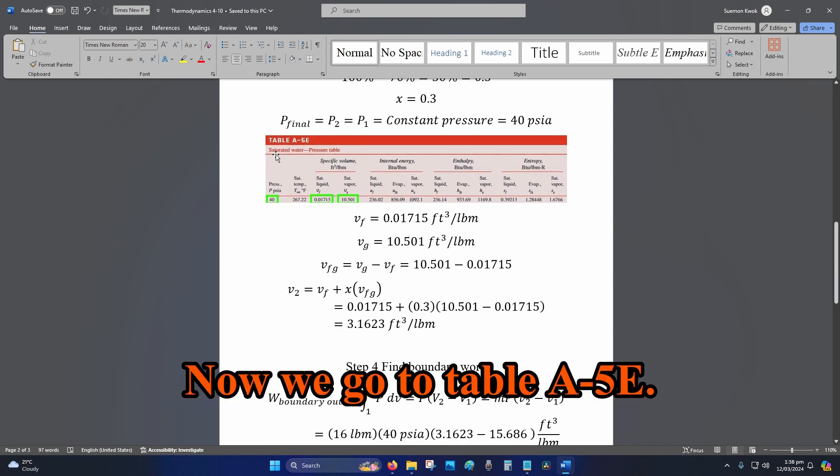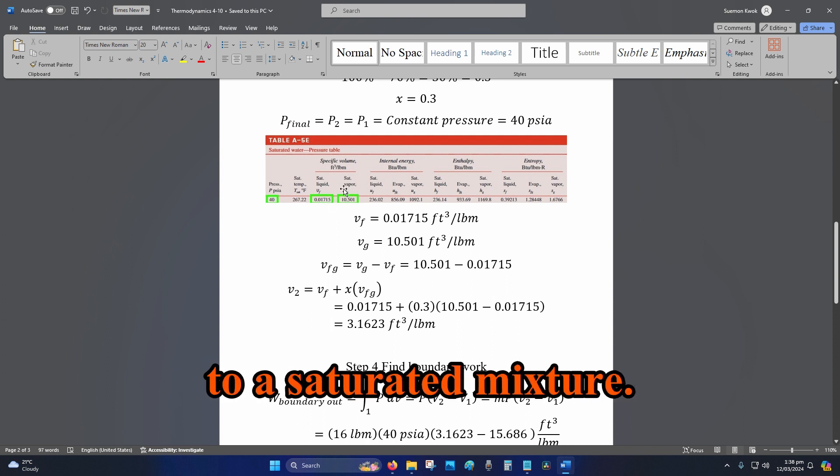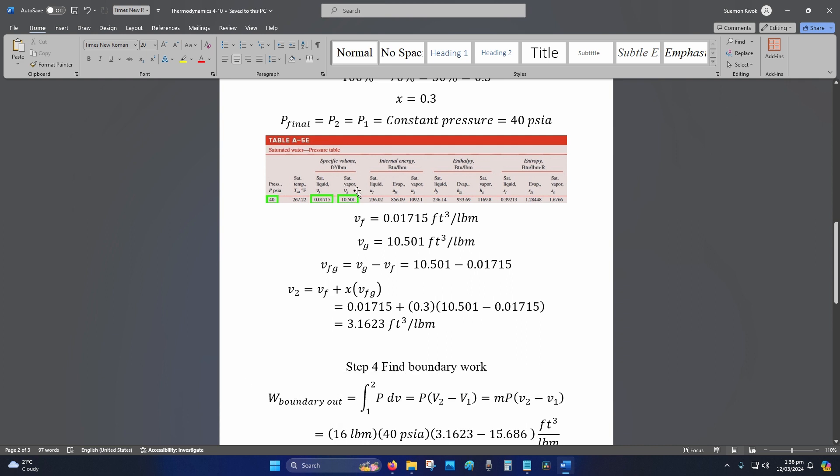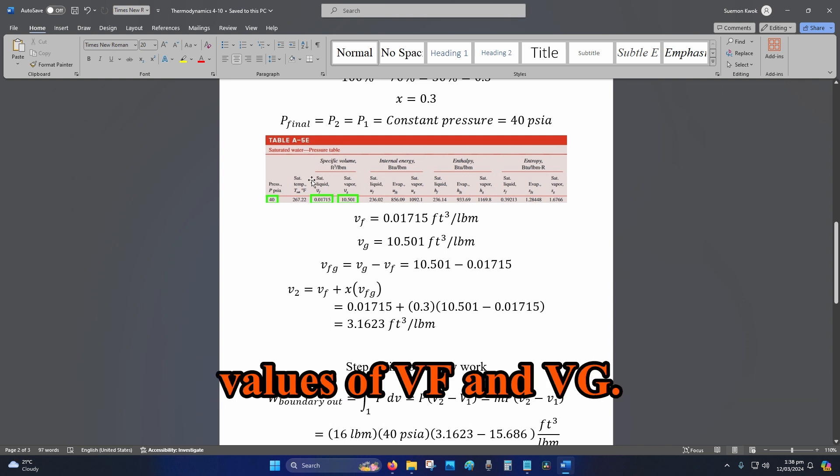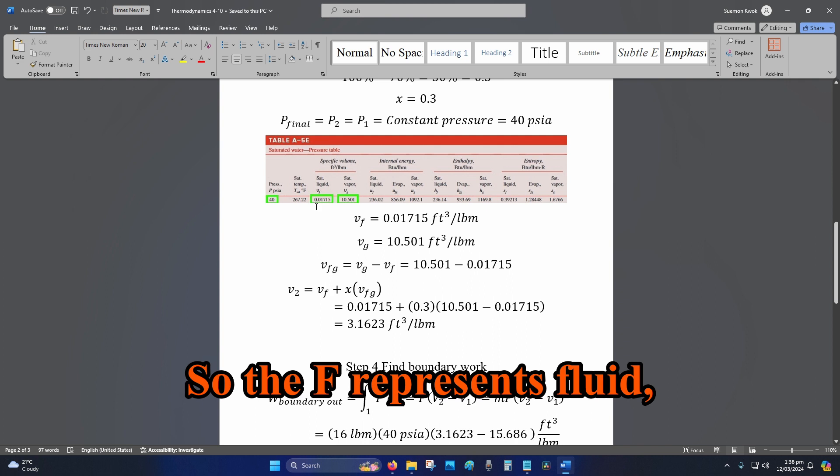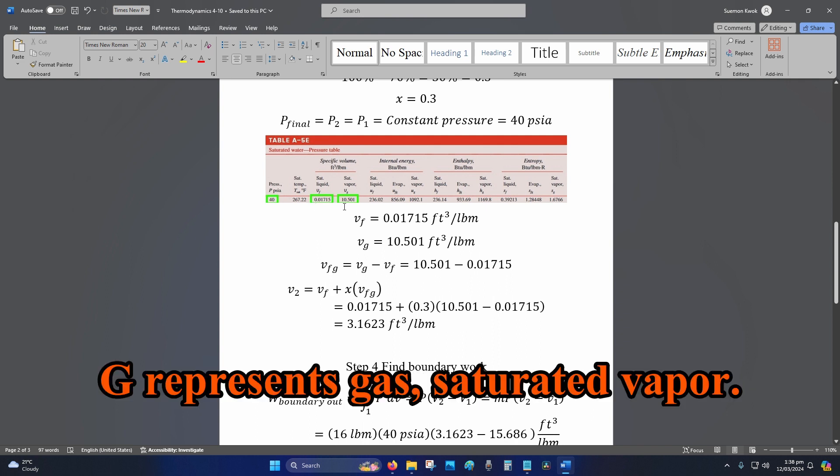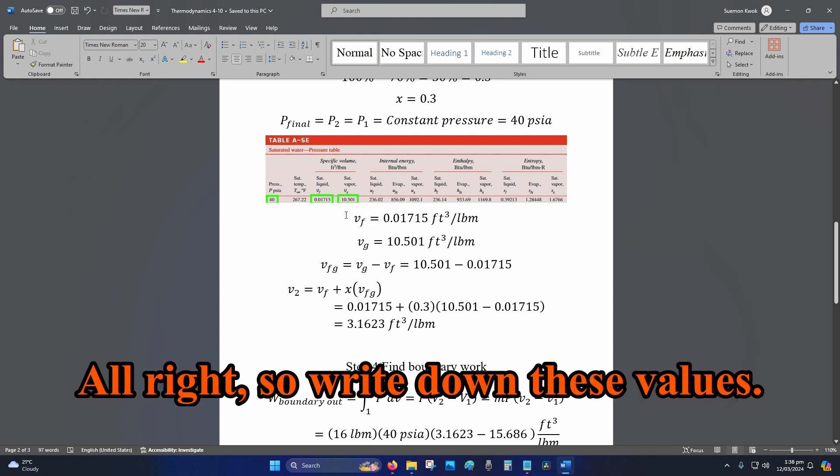Now we go to table A-5E. We go to 40 psi. Now it's cooled down to a saturated mixture. So what we do is we need to find the values of VF and VG. VF is your saturated liquid or saturated fluid. So the F represents fluid, G represents gas, saturated vapor. Alright, so write down these values.